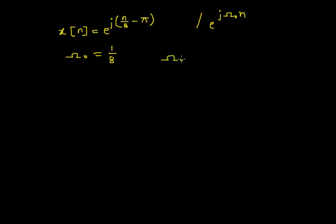That is I must be able to write omega 0 as 2 pi into bracket m divided by capital N, where m and N both must be integers.